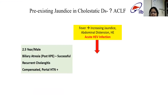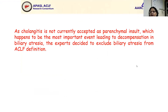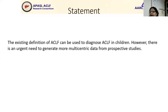One of our cases of biliary atresia was having normal jaundice because of a successful Kasai procedure, but developed HEV infection and landed into a typical picture of ACLF, as seen with the rising bilirubin and INR graphs. So ACLF is possible in biliary atresia. However, the consortium felt that as cholangitis is not currently accepted as a parenchymal insult — being just like any other sepsis, which happens to be the most important event leading to decompensation in biliary atresia — the experts decided to exclude biliary atresia from the ACLF definition. Pediatric ACLF needs to collect more data and seek a change in the definition to include biliary atresia.